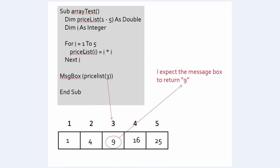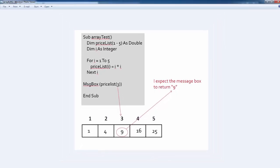We're going to put this into an actual Excel worksheet and see if we can get it to work. We'll declare a five-position array. Arrays are tied very tightly with loops, so we'll use a loop counter and create a loop from one to five. When we're in loop one, array position one equals one times one. Loop two, array position two equals two times two, or four. So on the third loop, array position three would be three times three, or nine.